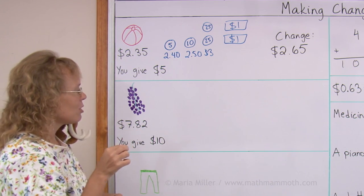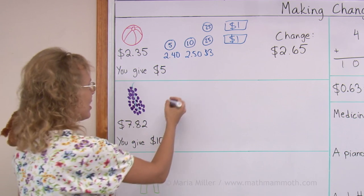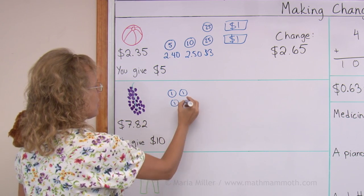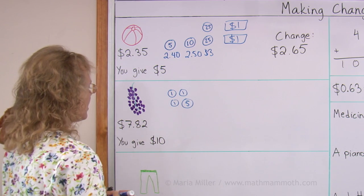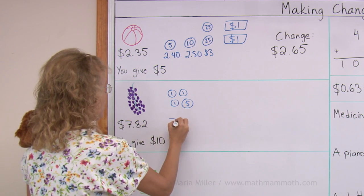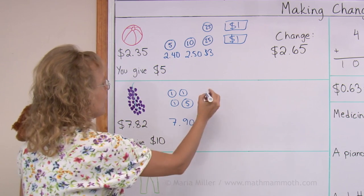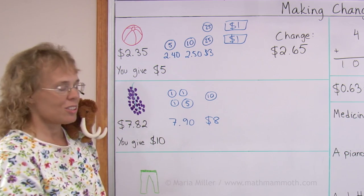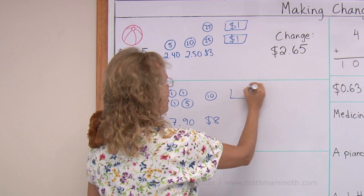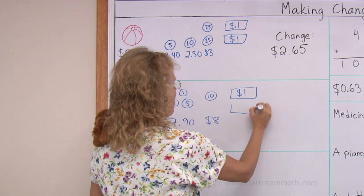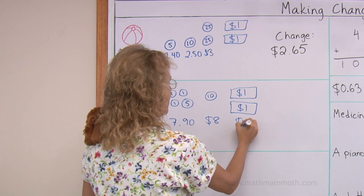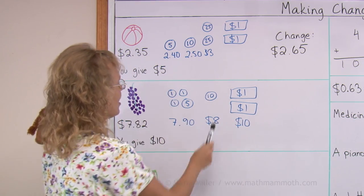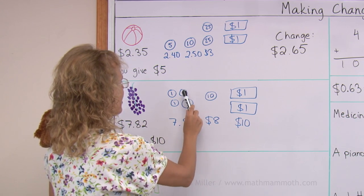So I will first draw coins to go to $7.90. I would draw 8 cents. Here's 8 cents. And after adding this and this I would have $7.90. And then I add 10 cents. And after that I would have exactly $8.00. And then again I need $2.00. And that makes it $10. And the change is all that is here: $2.18.